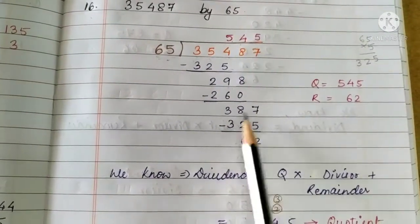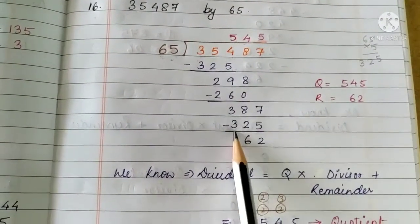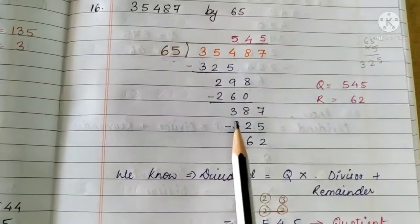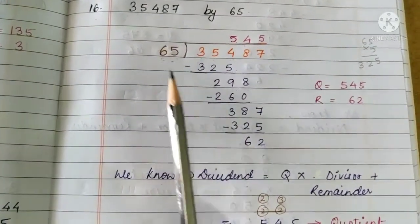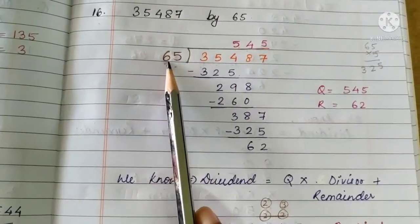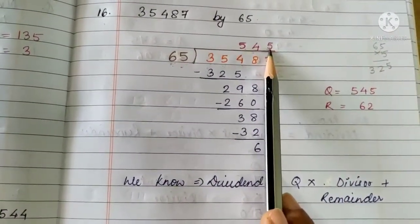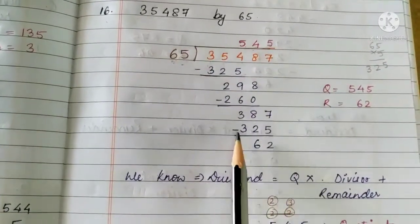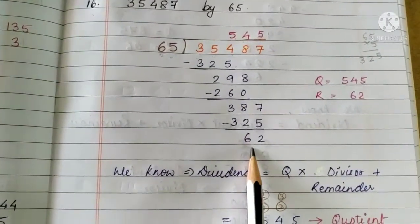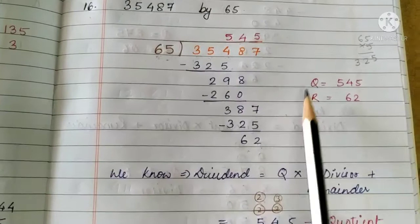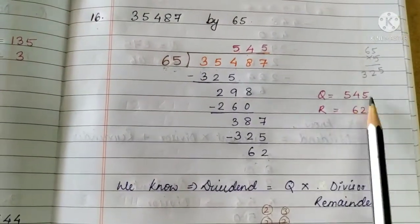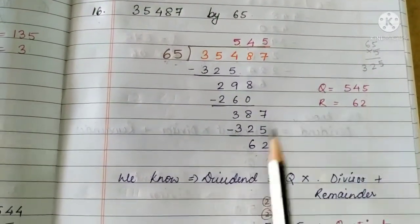We bring down the last digit, making 387. So, again, it is 3, right? 300s. So, we check the table of this number. Again, we are stuck with 5 here. So, 5 is written as a quotient on the top. So, 65 fives are again 325. The remainder is 62. So, our quotient is 545 and the remainder is 62.